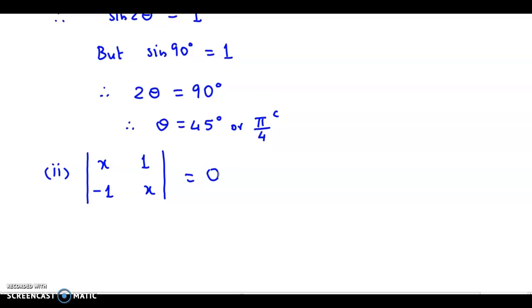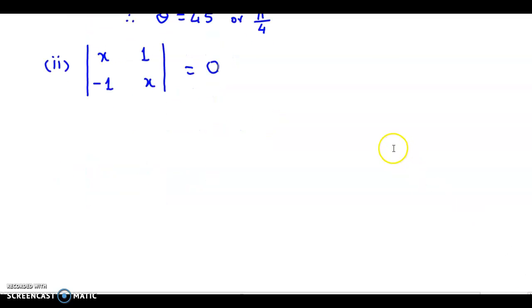Now let's solve this. From here we get x into x, that's x², minus -1 into 1, that's minus 1, is equal to 0. So we have x² + 1 = 0, or we could say x² is equal to -1.